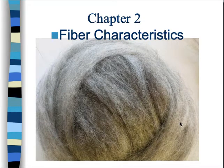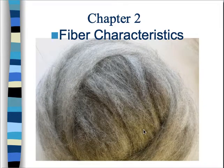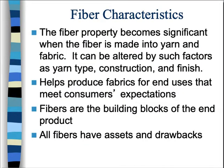This is the new chapter — chapter 2 — which is all about fiber characteristics. When we talk about fiber characteristics, we'll talk about all the different properties that are really important about the fiber once it's been made into yarn and then eventually into fabric. It can be altered by such factors as yarn type, construction, and finish, meaning that the characteristics that are really important can be changed from what they are naturally.